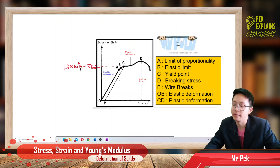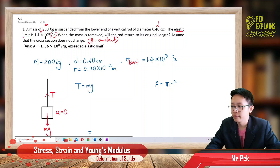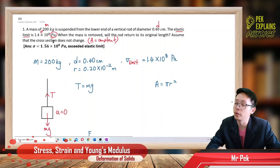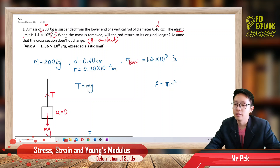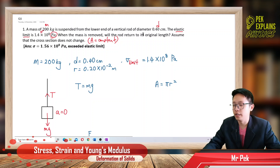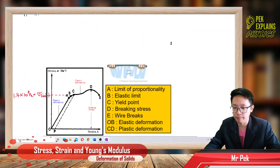This question is asking: when this 200 kg mass is suspended from the rod, pulling the rod, is the stress applied to the rod more than this elastic limit or less than this elastic limit? That is what we want to investigate. If the stress applied is more than the elastic limit, then the rod cannot return to original length. But if the stress applied is less than the elastic limit, then it only undergoes elastic deformation and will return to original length.